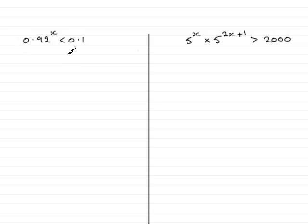If we start with this one here, we've got to solve 0.92 to the power x is less than 0.1. So I'm going to take logs to both sides in the same base. It can be any base, but base 10 would be the easiest because you'll find it on most calculators. So log to base 10 on the left hand side would have the log of 0.92 to power x is less than the log of 0.1.